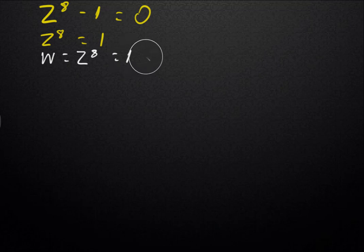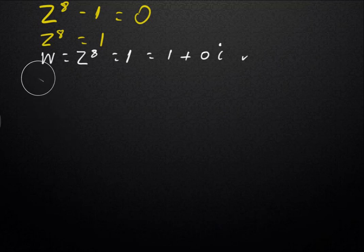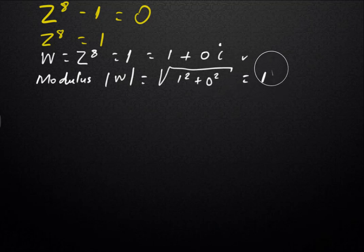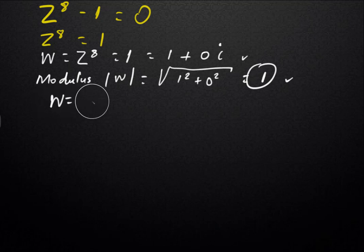So if w is equal to z to the power of 8, it is equal to 1, which is also equal to 1 plus 0i — where i is the imaginary part, which is 0 in this situation. We know that the modulus will be just 1. We can calculate it: the modulus is equal to the square root of 1 squared plus 0 squared, which equals 1. So we don't have to worry about the modulus during the next calculations.